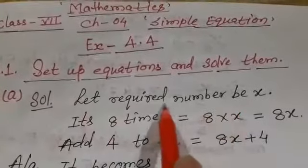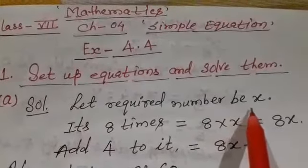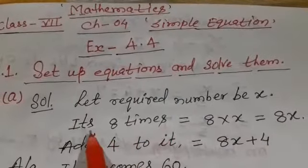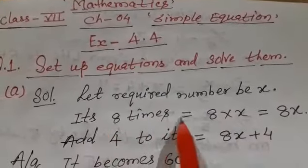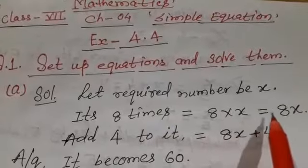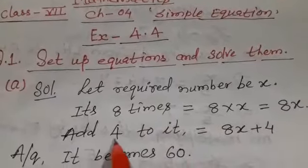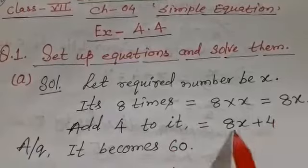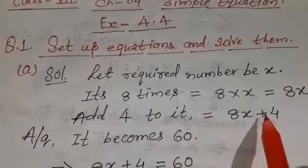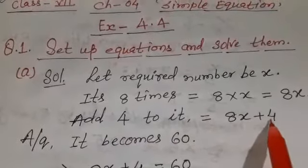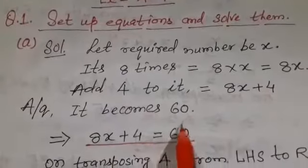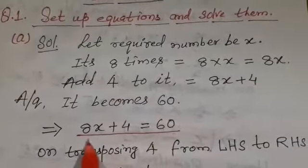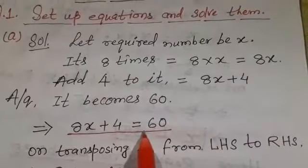Here x is the required number. The question says 8 times of it, so that is 8 multiplied by x, equal to 8x. Now add 4 to it — it becomes 8x plus 4. According to the question, 8x plus 4 equals 60, so we write the equation as 8x + 4 = 60. The equation is now set up.